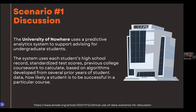Our first scenario is a discussion. I have a fake scenario, but it's definitely based on real premises. The University of Nowhere uses a predictive analytic system to support advising for undergraduate students. The system uses each student's high school record, standardized test scores, and previous college coursework to calculate — based on an algorithm developed from several prior years of student data — how likely a student is to be successful in a particular course.